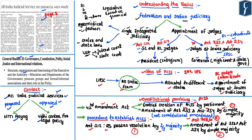The 42nd Amendment Act is only an enabling feature for the creation of the All India Judicial Services. The procedure to establish the AIJS would be: first, the Rajya Sabha should pass a resolution supported by two-thirds of the members present and voting in accordance with Article 312; after the passage of such a resolution, Articles 233 and 234 have to be amended by both Lok Sabha and Rajya Sabha by a simple majority; and after this, an All India Judicial Service can be established. Having understood the idea behind the AIJS and the constitutional provisions related to its creation, let us now understand the debate about the creation of the All India Judicial Service.